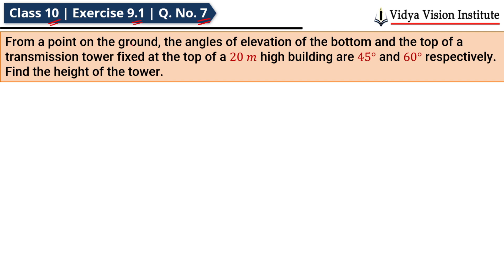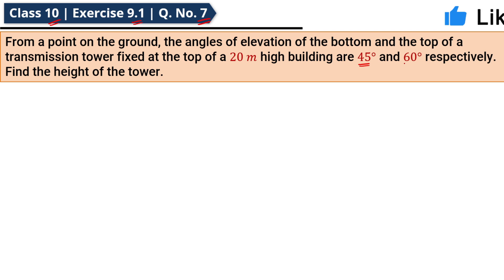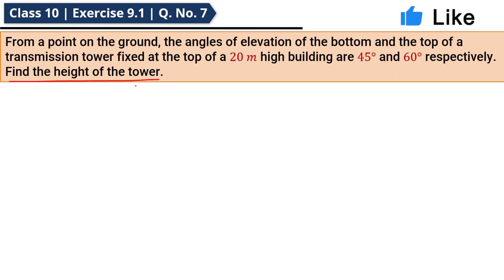From a point on the ground, the angles of elevation of the bottom and the top of a transmission tower fixed at the top of a 20 meter high building are 45 degrees and 60 degrees respectively. Find the height of the tower.